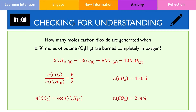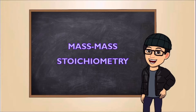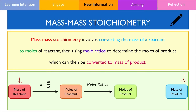In the next section of this video, we will perform calculations involving mass-to-mass stoichiometry. As the name suggests, mass-to-mass stoichiometry involves finding the mass of the products from the mass of the reactants. To do this, we find the number of moles of reactants, and then using mole ratios, we find the number of moles of product, which can then be converted into mass using the formula: mass equals moles multiplied by molar mass. All mass-to-mass stoichiometry calculations will follow this process.